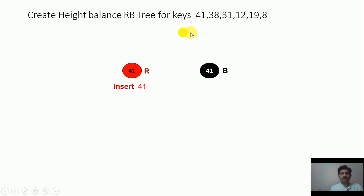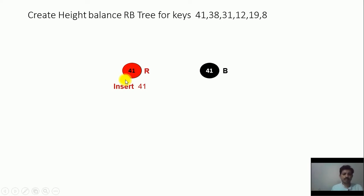We have to create an RBTree for these keys. We have to first insert key 41 in a node. 41 is a new node and it is our first node. The color of the newly inserted node is red. But by property number 2, since this is a root node, the color of the root node will be black. So we have to color it as a black node.